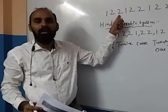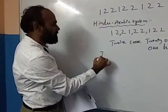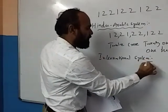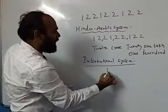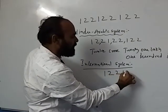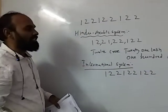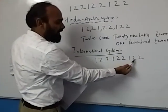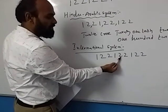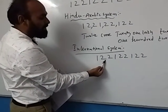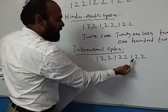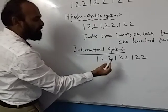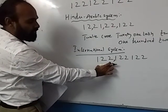Now I will write the same number in the International System. Writing the digits: 1, 2, 2, 1, 2, 2, 1, 2, 2. Now I put the place values in the International System: ones, tens, hundreds, thousands, ten thousands, hundred thousands, millions, ten millions, hundred millions. Hundred millions means use three digits for the comma group.